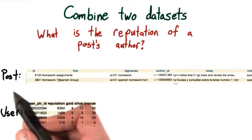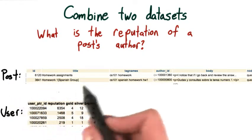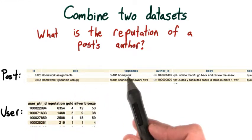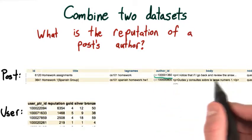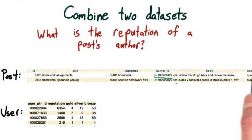And the post table contains data about each post. Some ID, the title of the post, any tags, this author ID which is going to be interesting, and then the body of the post and some other things.